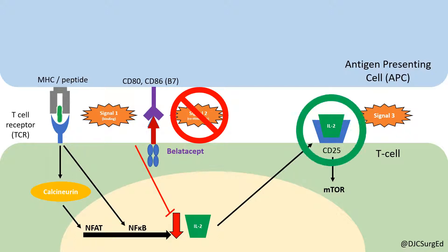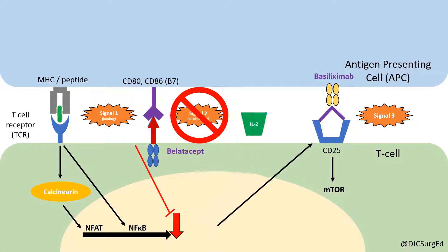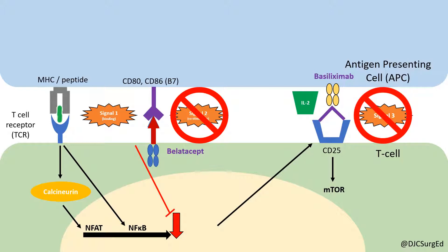Signal 3 begins with engagement of IL-2 on CD25. Basiliximab is a chimeric monoclonal antibody to the alpha chain of CD25, thus preventing further T cell activation.